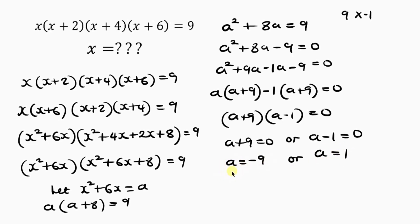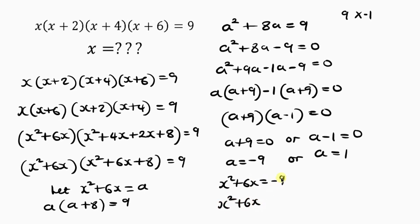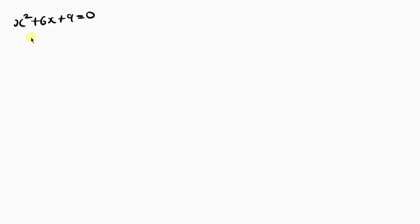Remember we said a = s²+6s. So for the first case, putting s²+6s in place of a gives s²+6s = −9. Bringing −9 to the left-hand side, it becomes positive 9: s²+6s+9 = 0. This is a quadratic equation. Let's solve it.